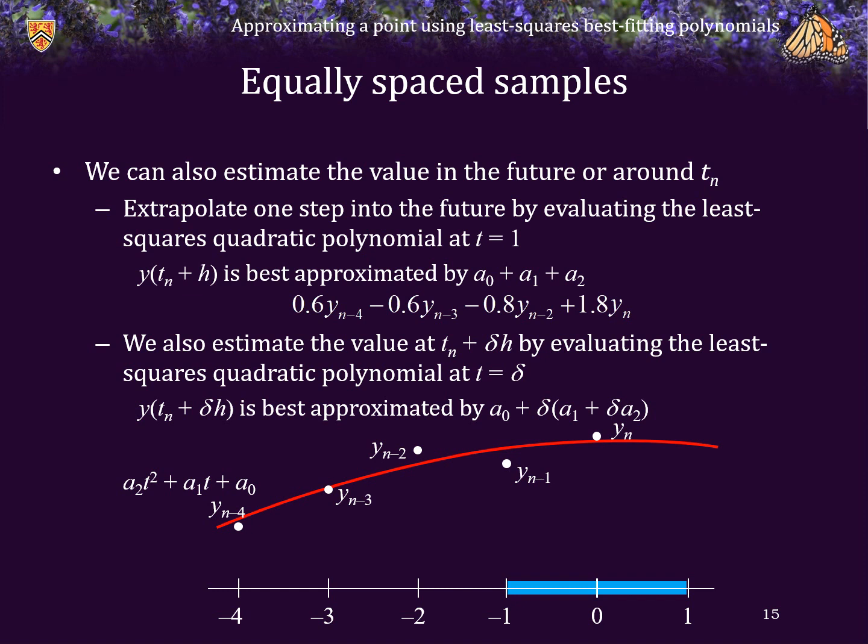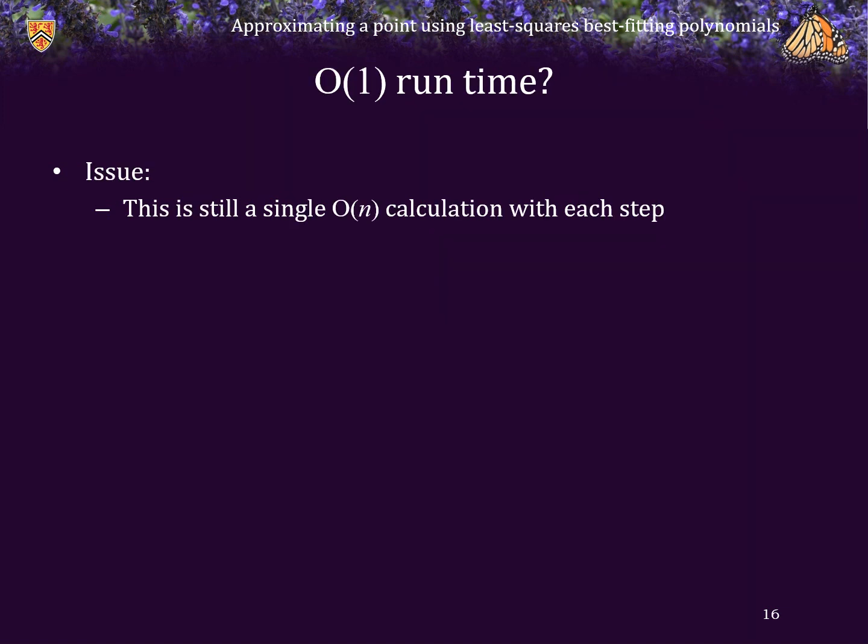We can extrapolate into the future or evaluate the function around time t_n by evaluating this interpolating polynomial around zero. Some of you may have noticed that solving the system of linear equations ultimately only required order n time, because the matrices were either 2 by 2 or 3 by 3. It was a large integer times n, but it was order n, and here we are still calculating the coefficients using a linear combination of n values, which is still order n.